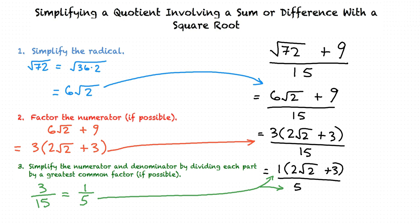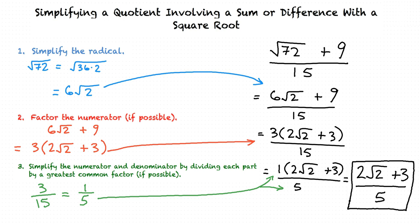We simplify one step further by leaving out the 1. So the final answer is 2 times the square root of 2 plus 3, all divided by 5.